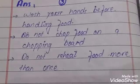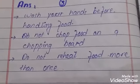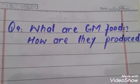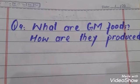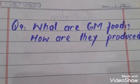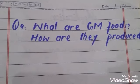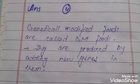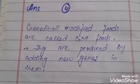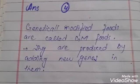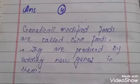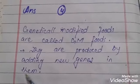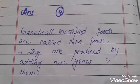Question three: Suggest ways to avoid food poisoning. Wash your hands before handling food, do not chop food on a dirty chopping board, and do not reheat food more than once. Question four: What are GM foods and how are they produced? Answer: Genetically modified foods are called GM foods. They are produced by adding new genes into them.